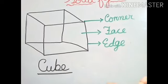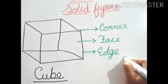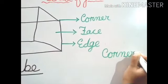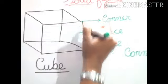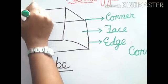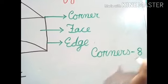Okay, now how many corners are there? We will count it and write it here. So first is corners. Let us count. One, two, three, four, five, six, seven, and eight. So we will write here eight corners.